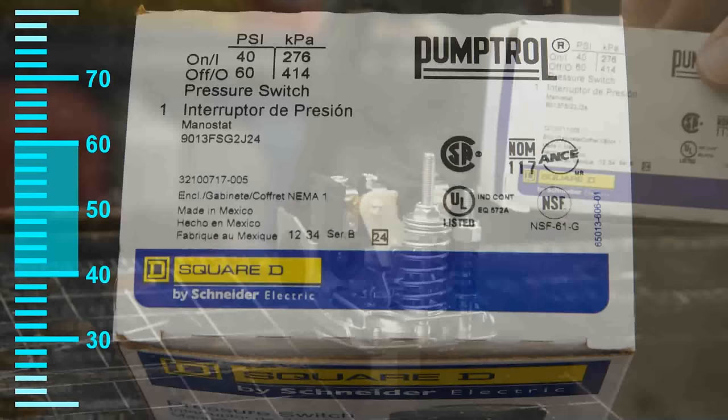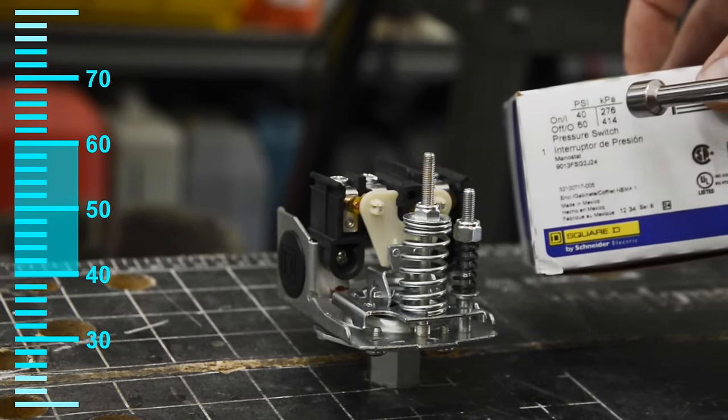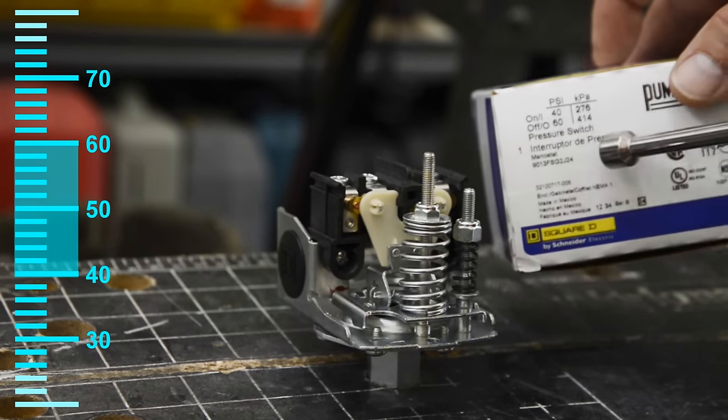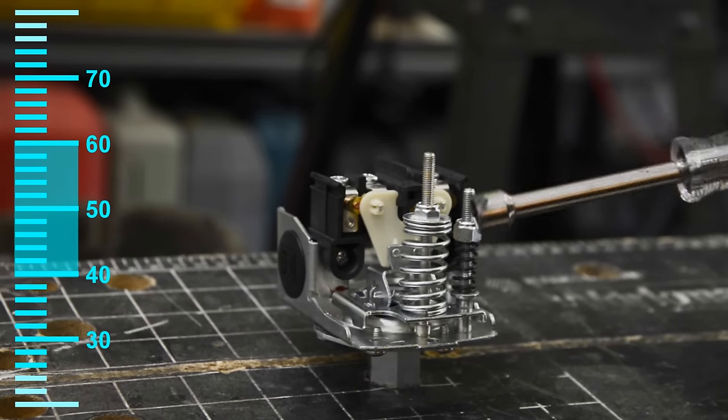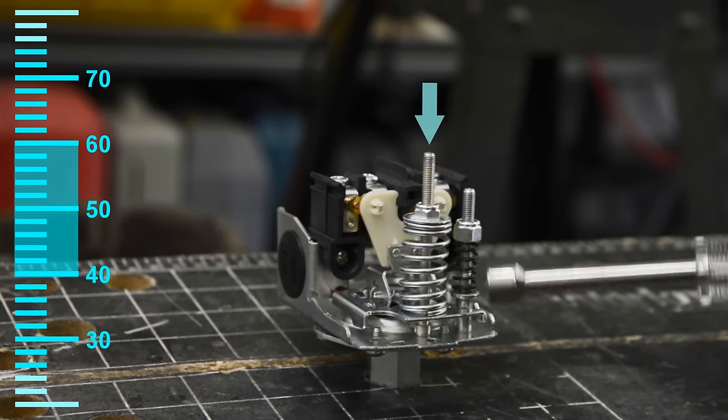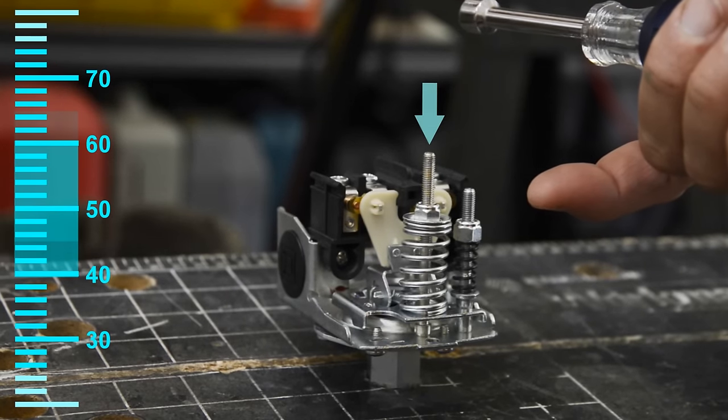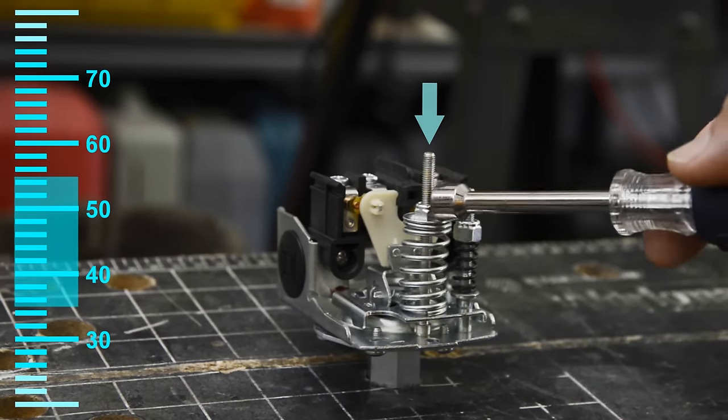There's also 30/50s that are used for household well pumps, but for commercial applications that require a little more pressure, it's more often that you're going to see a 40/60. The center adjustment does that range from 40 to 60, and you can raise the range to 45-65, or lower it down to 35-55 with this center adjustment.